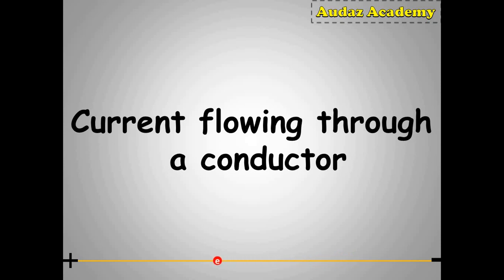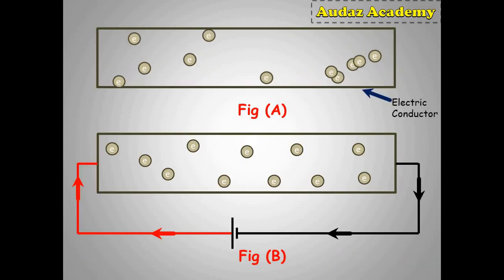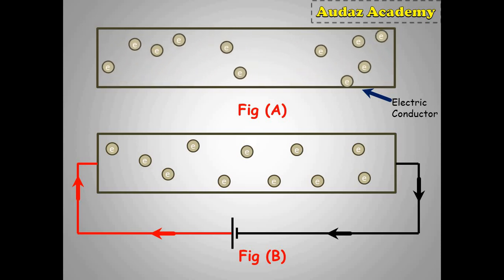Now let us understand how current flows through a conductor. In figure A, it is clearly seen that when potential difference is not applied to a conductor, the electrons show random motion. These electrons are not under any influence of external field.